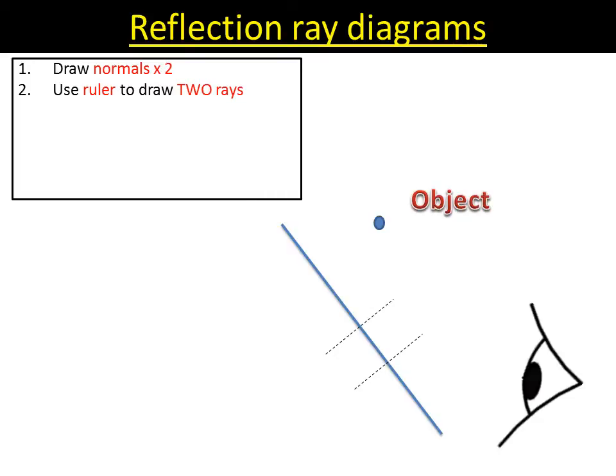Now as this is reflection, we need to draw two rays and the angle of incidence equals the angle of reflection. So we draw two rays. There's the first one. You can clearly see that the angle between the incident ray coming from the object and the normal is equal to the reflected ray, which is coming between the normal and that reflected ray.